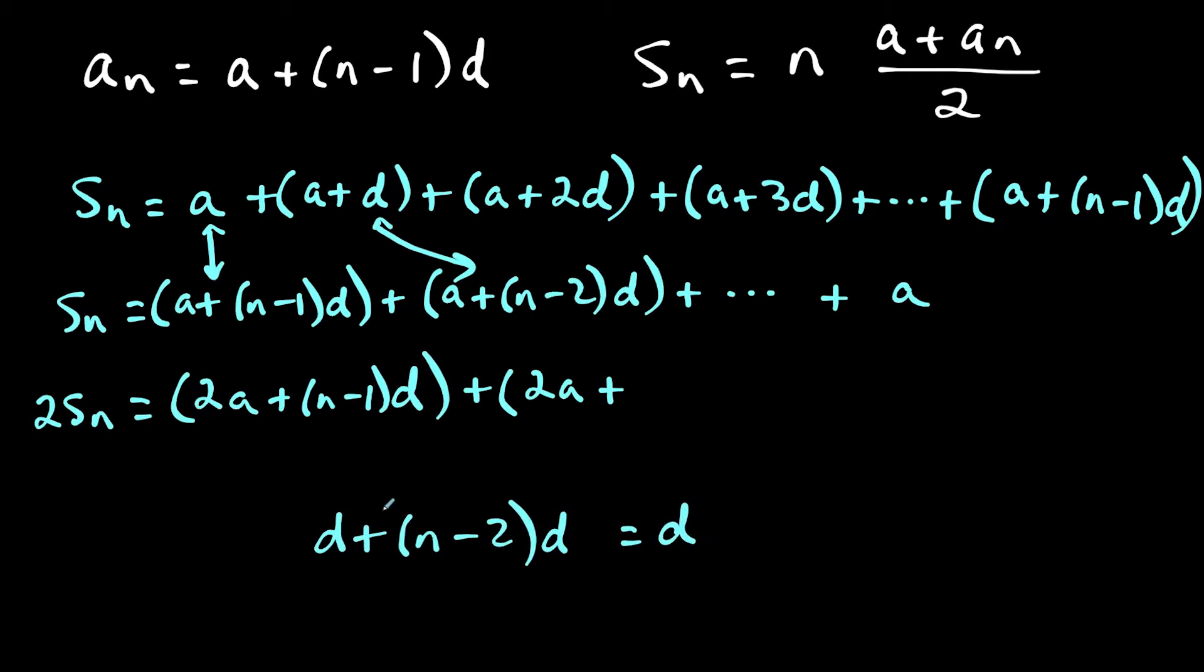But think of it as I have coefficients that I'm adding here. So this is technically like 1d plus n minus 2 times d. So I do 1 plus n minus 2, which is n minus 1. But if you want to see by factoring, I factor out d, and I have 1 plus n minus 2. So this would equal d times n minus 1.